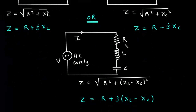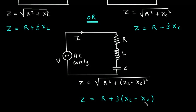If the load is R, L and C, the impedance Z equals the square root of R squared plus (XL minus XC) whole squared. This is in scalar form. In vector form, Z equals R plus J times (XL minus XC), where XL is the inductive reactance equal to Omega L, and XC is the capacitive reactance equal to 1 upon Omega C.